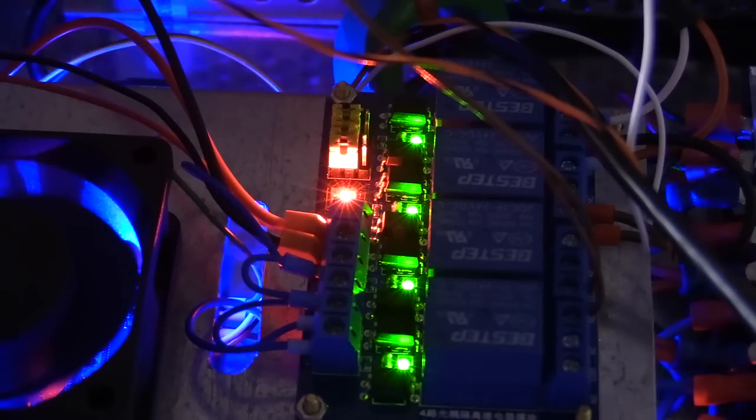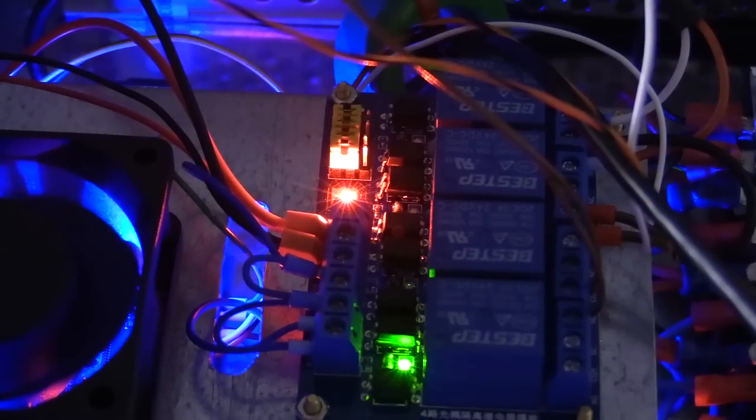Now I've turned off the spindle with the M5 command, waiting a moment before turning the flood enable off with the M9 command.